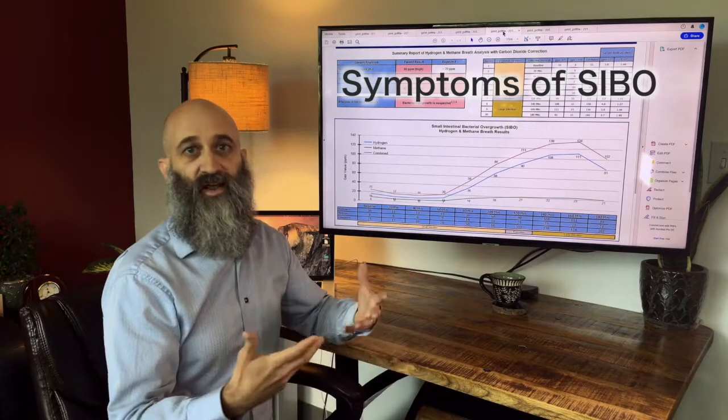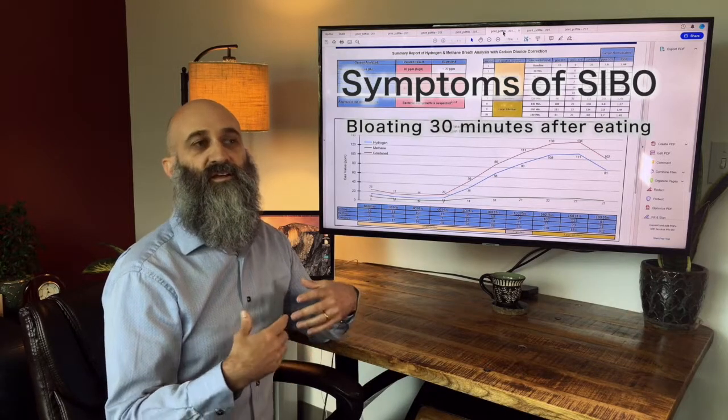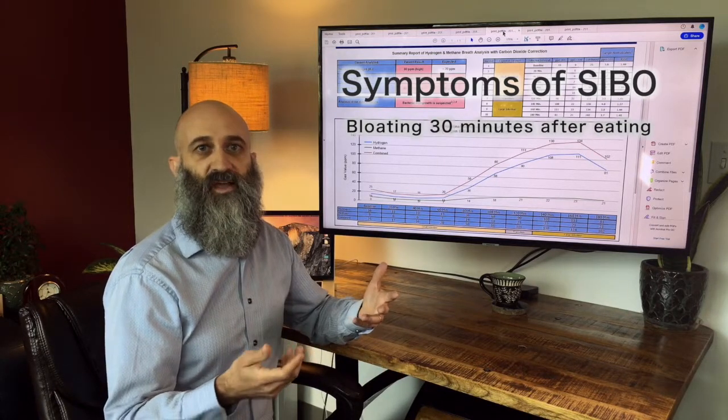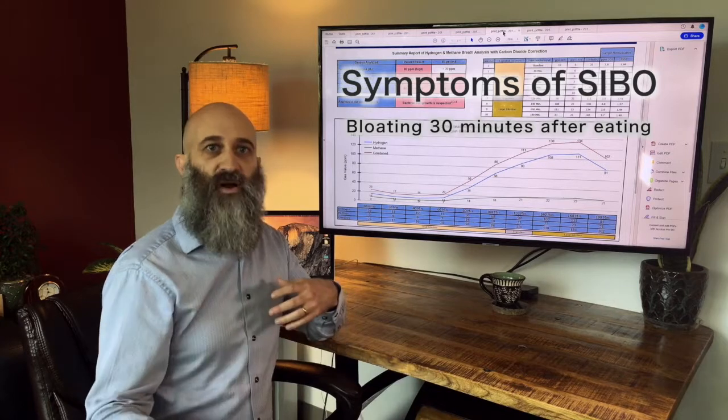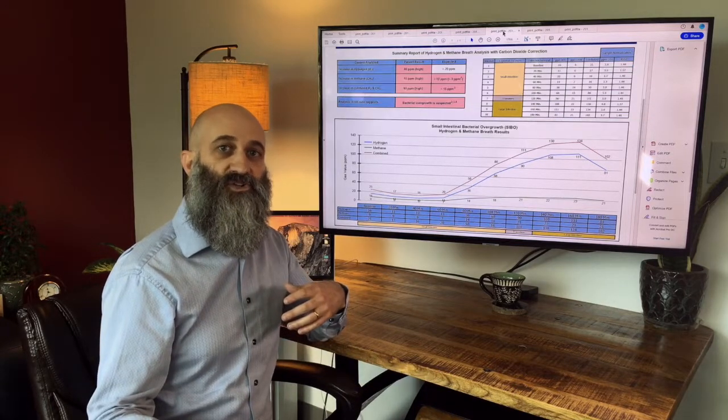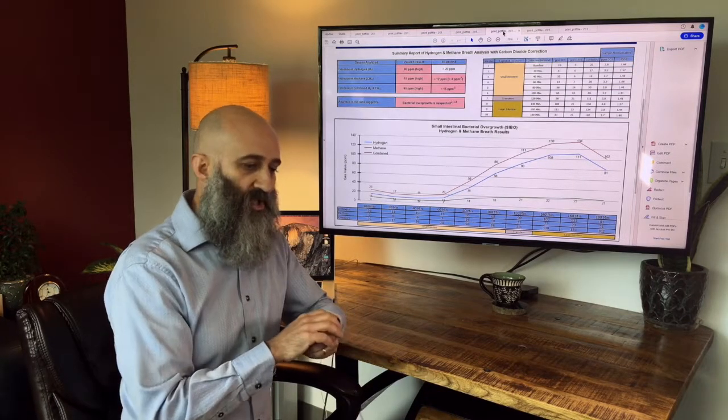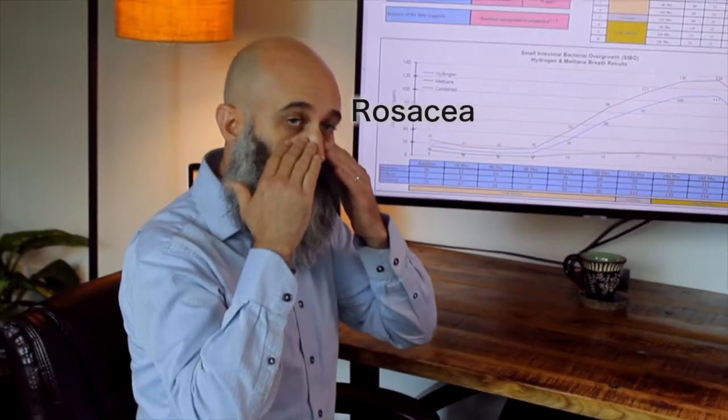Classic symptoms would be bloating after you eat, within 30 minutes, not something that's two hours later because by then it's getting to the large intestine. SIBO is involved in a lot of underlying pathology. If you have rosacea around the nose area, most of those cases have SIBO positive testing. I find it's really quite common so I screen a lot of people for SIBO.